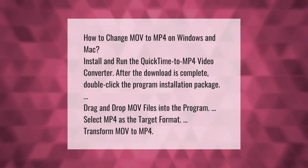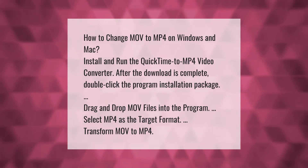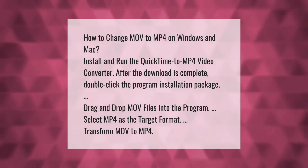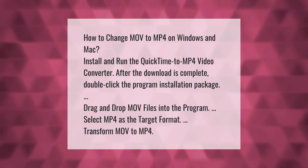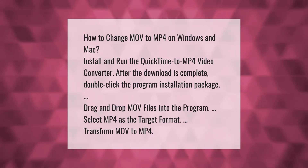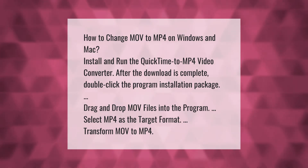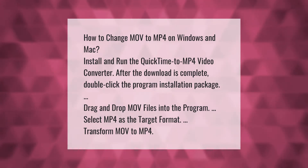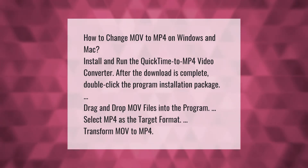How to change MOV to MP4 on Windows and Mac. Install and run the QuickTime to MP4 video converter. After the download is complete, double-click the program installation package, drag and drop MOV files into the program, select MP4 as the target format, and transform MOV to MP4.